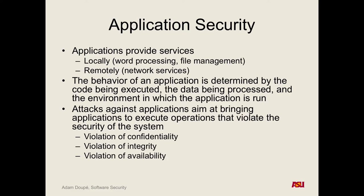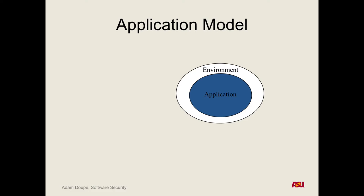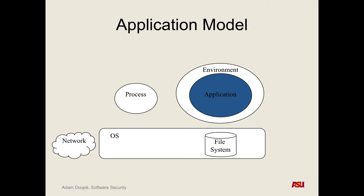So at a high level, we have the application — the code — running in some environment. You can think of it as running on an operating system, separate from the environment. It has access to a network oftentimes. There's a file system, there are other processes on the computer that can try to talk to this application.